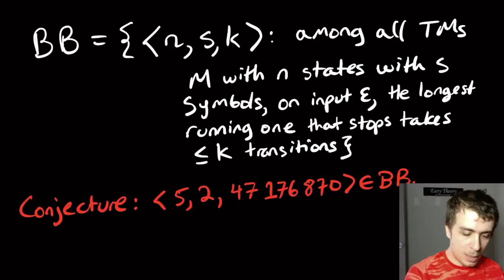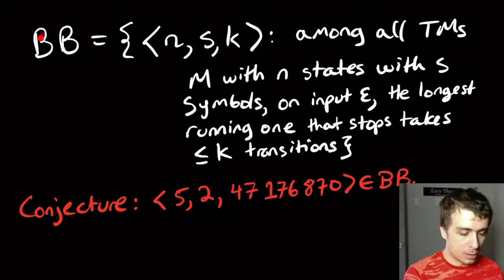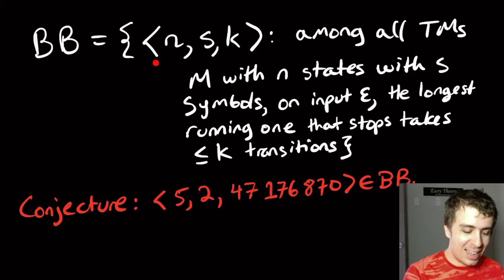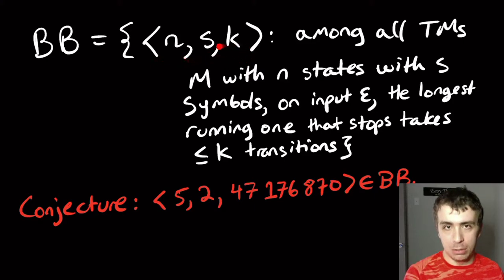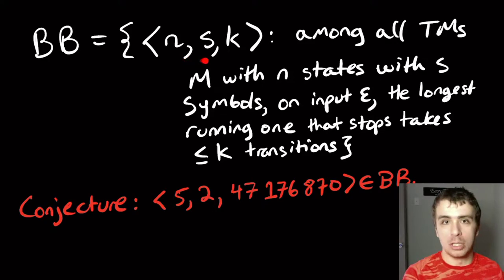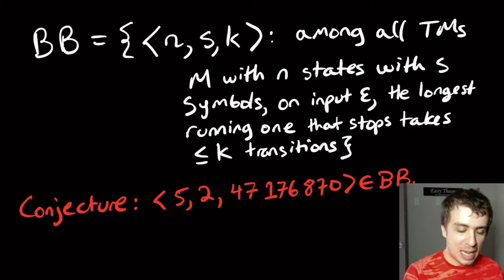I want to talk about a really interesting problem which is often called the busy beaver problem. I'm going to call this language BB and it's going to be the encoding of three integers: n, s, and k.